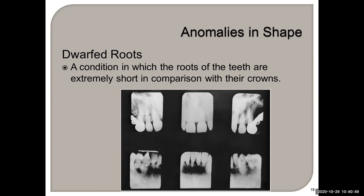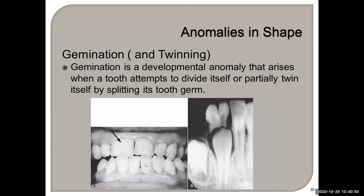Having accurate radiographs allows you to compare. Gemination, or twinning, is the developmental anomaly that arises when a tooth attempts to divide itself — partially twinning itself by splitting its tooth germ.